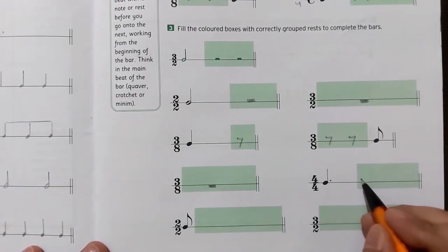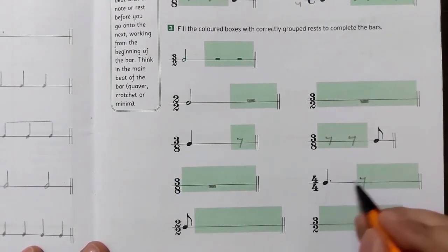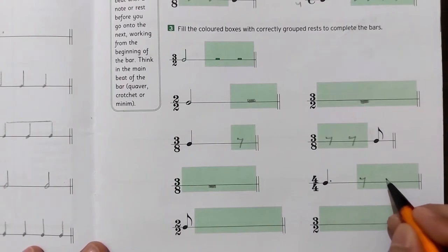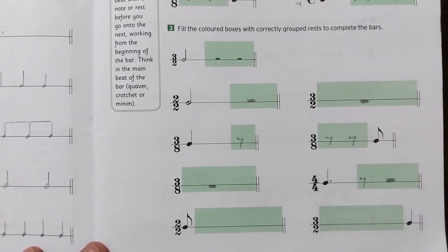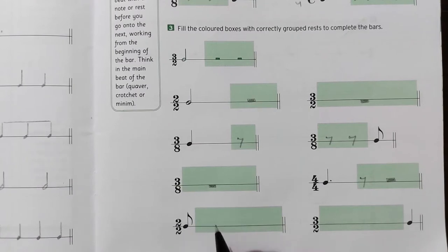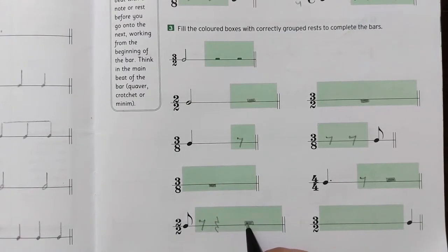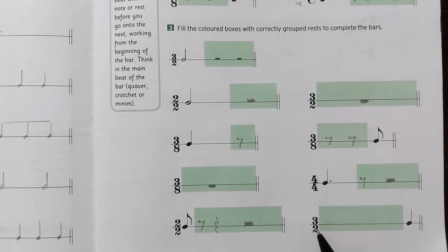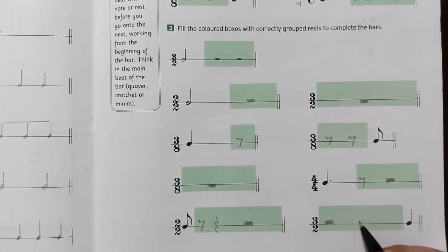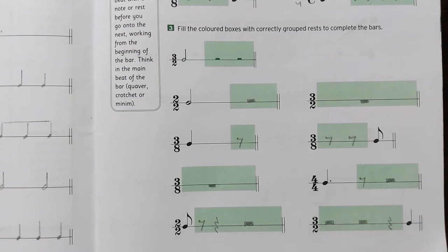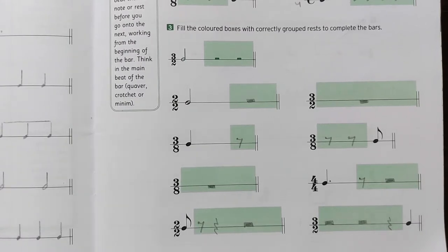Three by eight with the whole bar empty: one semibreve rest. Four by four: one and a half beats given, so we need one quaver rest to complete that beat, then one minim rest. Next two by two: we add a quaver rest, then one crotchet rest, then one minim rest. Next three by two — three minims per bar — we can have one minim rest, then one more minim rest, then one crotchet rest to complete the final minim value.